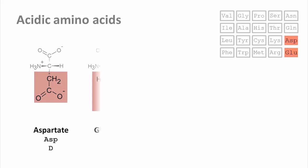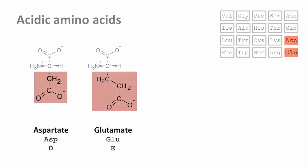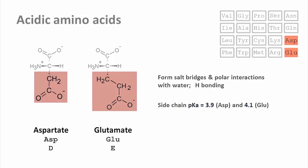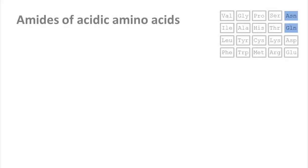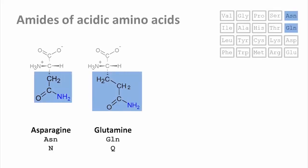Aspartate and glutamate are the two acidic amino acids with very similar properties. They engage in salt bridges — that is, ion–ion interactions on the surface and interior of proteins — as well as ion–dipole interactions with water. The side chains of aspartate and glutamate are weaker acids than the alpha-carboxyl groups; the pK of both amino acids is near 4, so any surface-exposed carboxyl groups in vivo are fully ionized as carboxylate ions. Both aspartate and glutamate also come in amide form: asparagine and glutamine. These are not acidic or basic, but they are highly polar — strong hydrogen bond donors as well as acceptors — and are typically found on the surface of proteins.